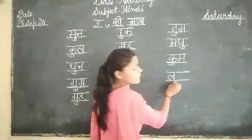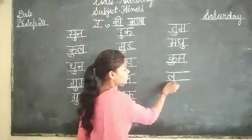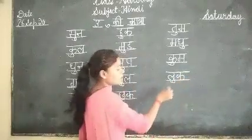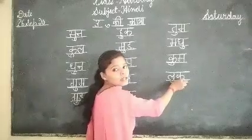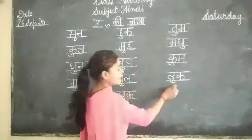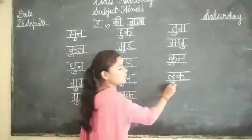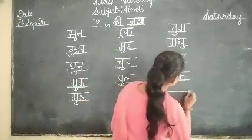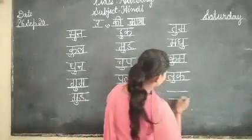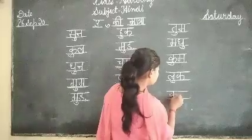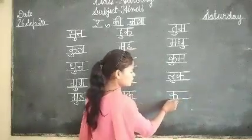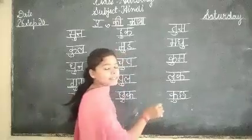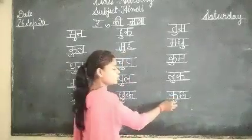आगे हैं ये — ल, क, उ — क्या बने है? क्या है? ल, उ, क — लु। आगे हैं ये। क, कु, श — क्या बने है? क, कु, श।